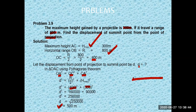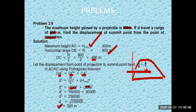If you draw the diagram, the projectile follows this path. This is the maximum height, which is 300 meters. The range is 800 meters, so half of the range — the horizontal distance to the summit point — is 400 meters.